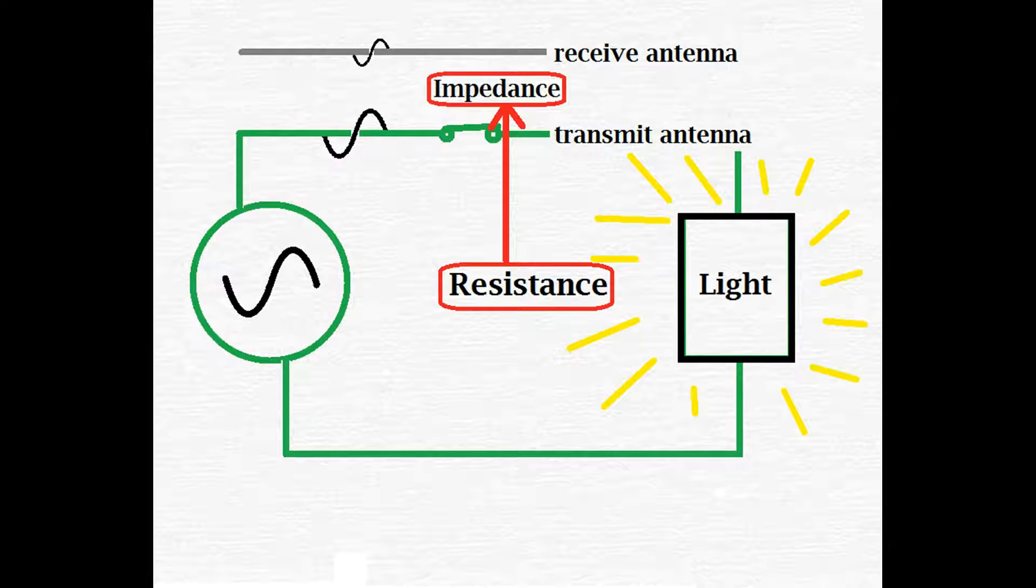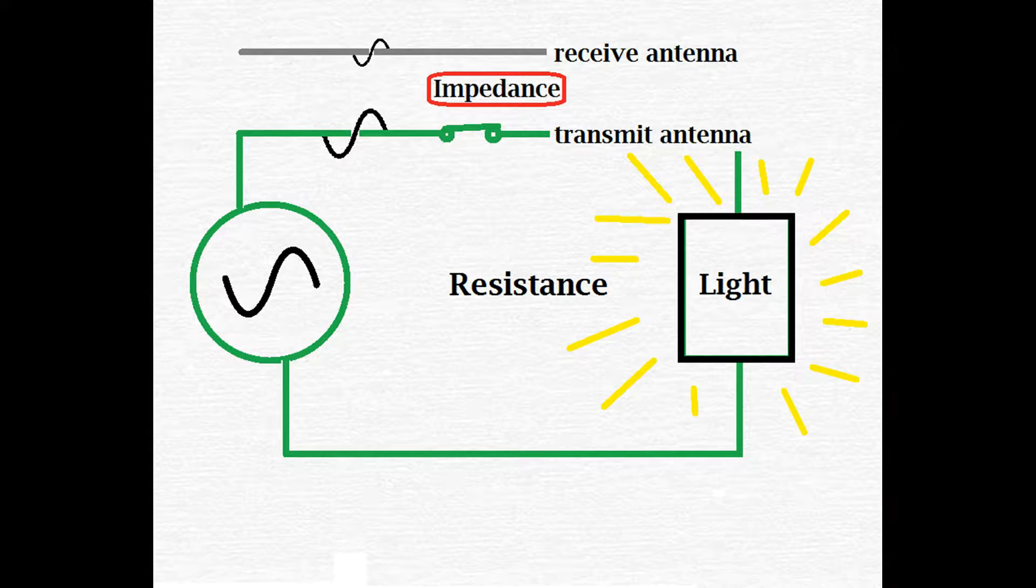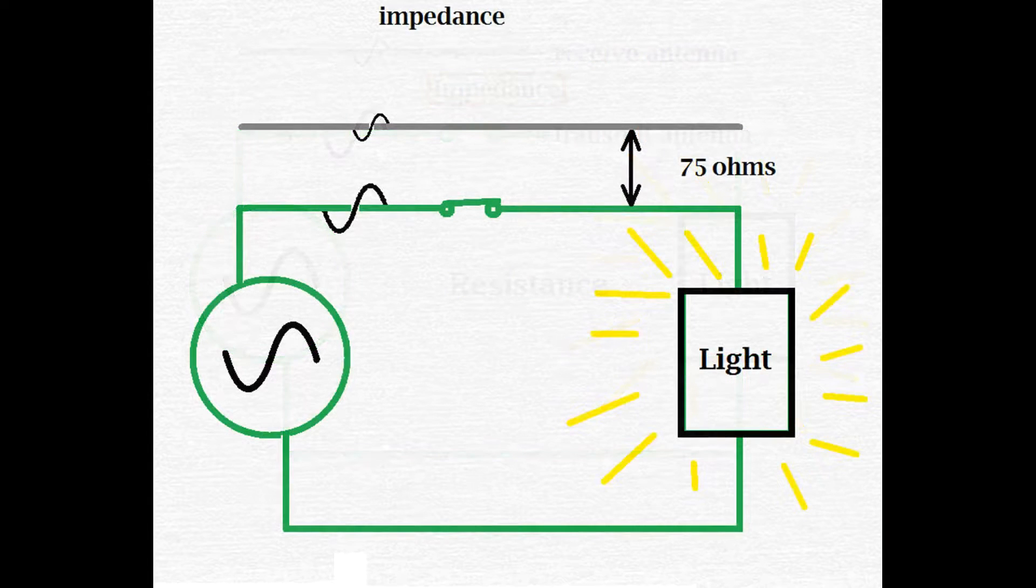There are several forces at work that try to prevent this transfer of voltage. These forces are called impedance. So this impedance is the same as an electrical resistance, but only AC voltages can see it. Impedance's unit of measurement is exactly the same as resistance. Both are measured in ohms.